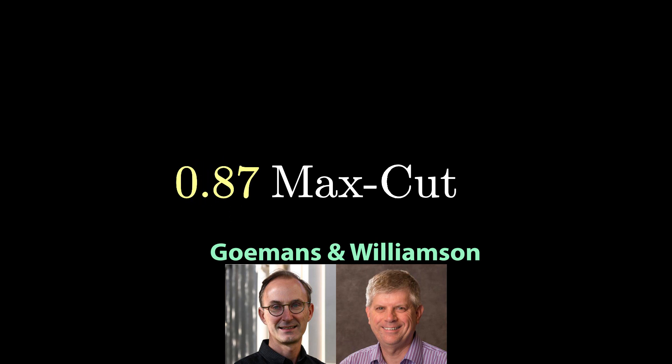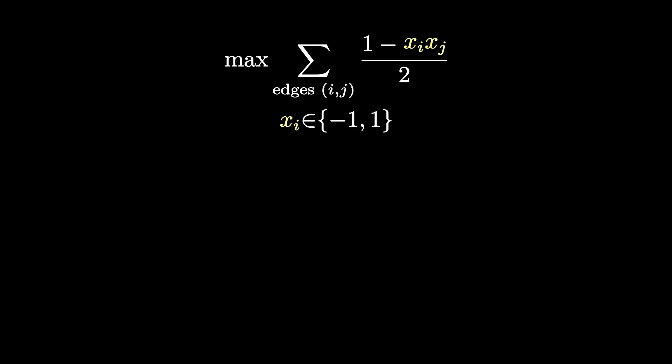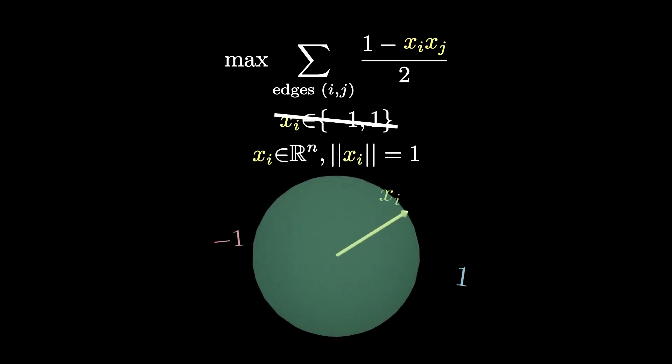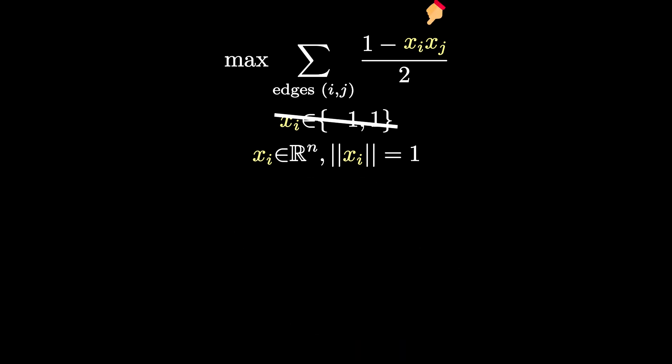Their method can actually be applied to any integer optimization problem — any optimization problem where the decision variables can take only two values, one and minus one. The method is called a semi-definite relaxation because of the following idea: instead of allowing only the two scalar values one and minus one for each variable xi, we allow each xi to be a vector of norm one. Whenever we have a product of xi with xj, we replace that with xi-transpose times xj. By doing this relaxation, we actually get a semi-definite program.